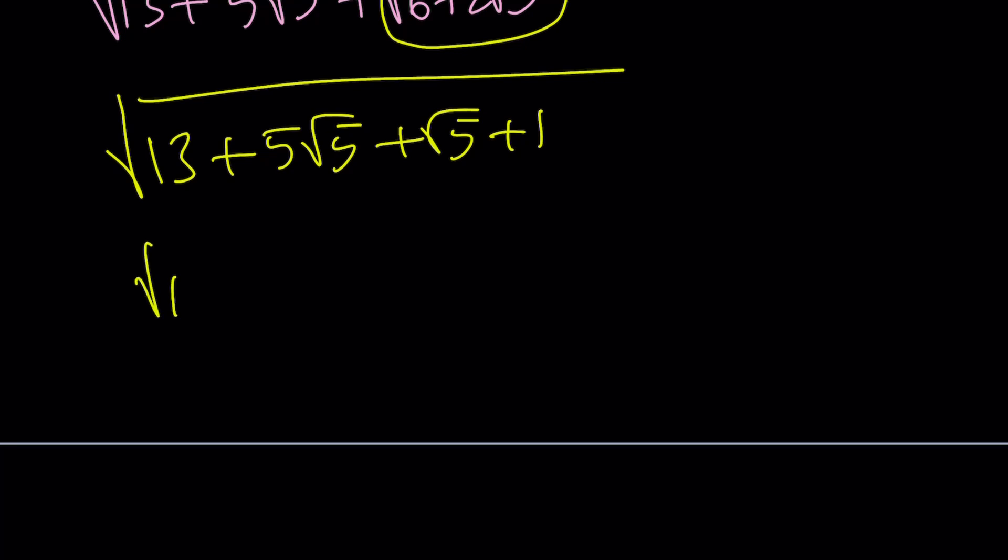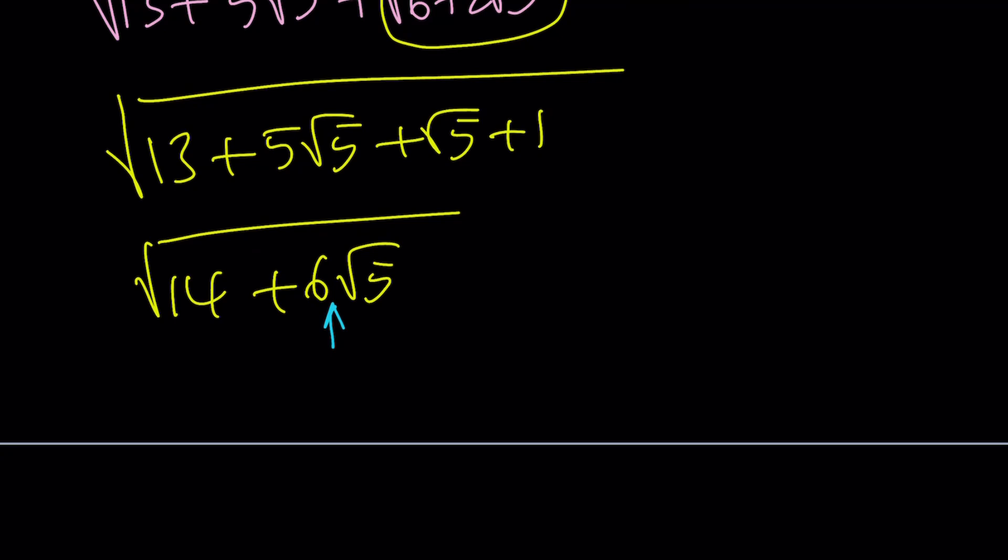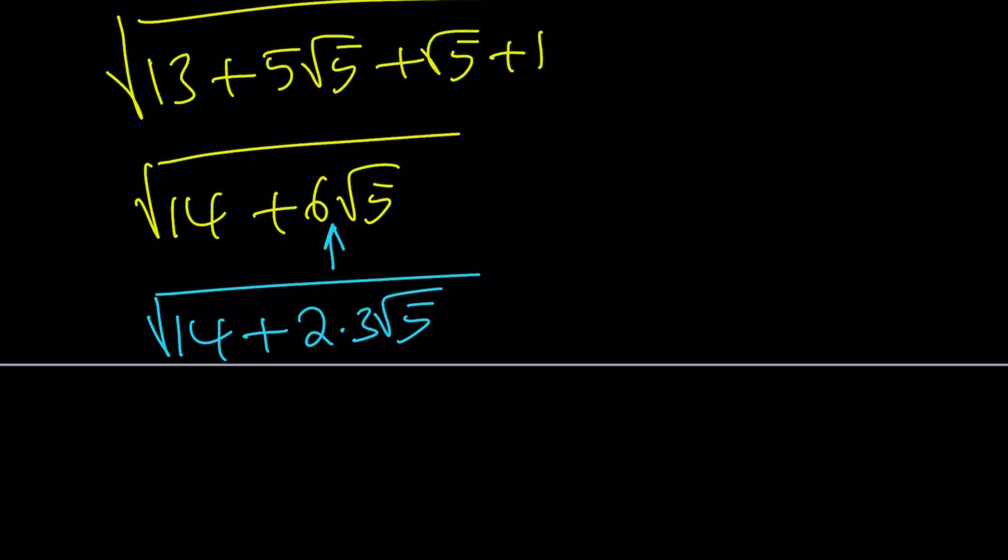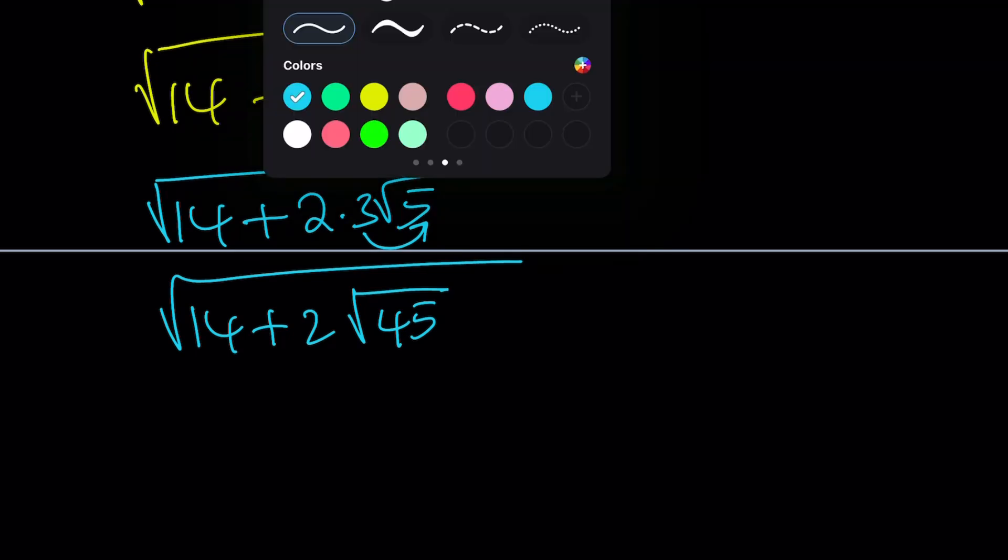13 plus 1 is 14 plus 6 root 5. And we can pretty much use the same idea, but instead of a 6 here, we would like to have a 2 inside the inner radical. And we can achieve that by just splitting up the 6 into 2 times 3, and then writing the 3 as square root of 9. In other words, putting it inside or multiplying by root 5. If you multiply root 9 by root 5, you get square root of 45.